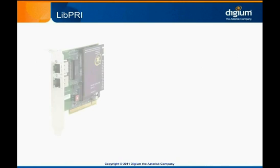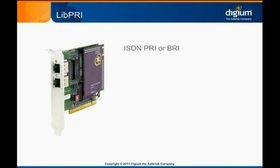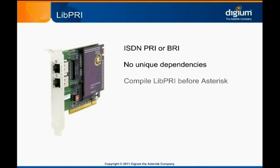The libpri package provided by Digium allows your digital telephony trunks to speak ISDN, PRI, or BRI. If you are not familiar with ISDN, just know for now that it is a telephony signaling protocol, which will be discussed in further detail in the analog and digital connectivity chapter. This package is only needed if you have a digital telephony card in your system and want to use ISDN on it. However, we suggest installing libpri anyway, as it has no unique dependencies — if you can compile DAHDI and Asterisk, you can compile libpri. It must be compiled before Asterisk in order for Asterisk to be able to use it.